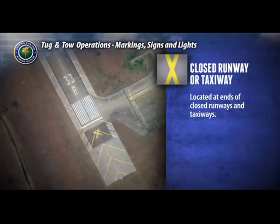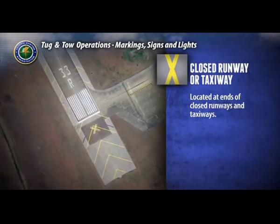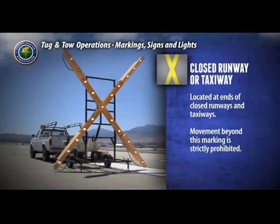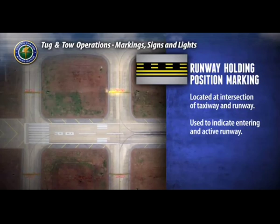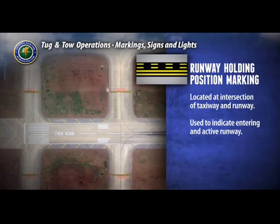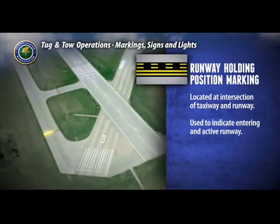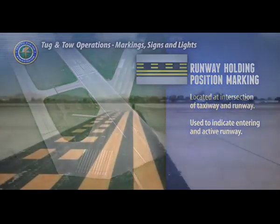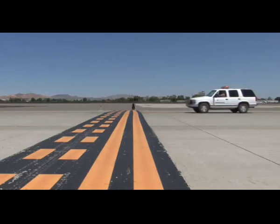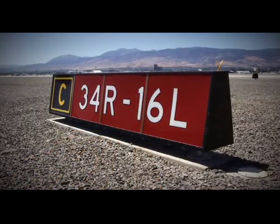A closed runway and taxiway marking is located at the ends of closed runways and taxiways. Movement beyond this marking is strictly prohibited, and a raised lighted sign may also be used. Runway holding position markings are generally found at the intersection of a taxiway and a runway, but may vary depending on specific airport layouts, such as those with closely spaced runway ends. These markings indicate that you are about to enter an active runway and will also be located with runway hold position signs.